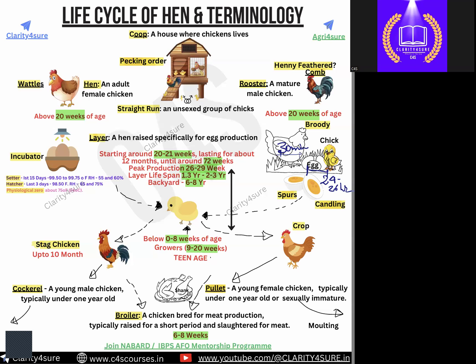Hello, my dear friends, welcome to Agri For Sure, a unit of Your Clarity For Sure, which is known for giving the highest number of results in NABARD Grade A. Today we will discuss the life cycle of hens and terms associated with the overall life cycle, because this topic is very important both for your NABARD examination and also for your IBPS AFO examination.